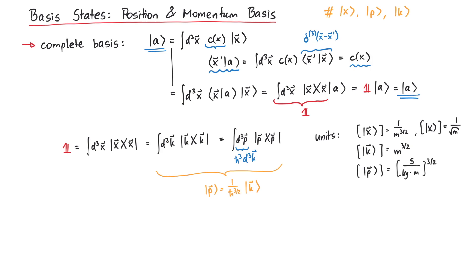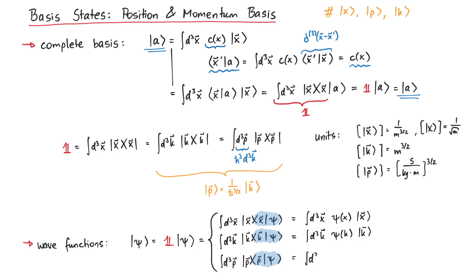Now, we are able to perform the main step of this video. If we start with a state vector psi, we can insert the identity operator, and then write it in three different ways. We now identify the projection of the ket psi onto the basis states as the wave functions in position space or momentum space.